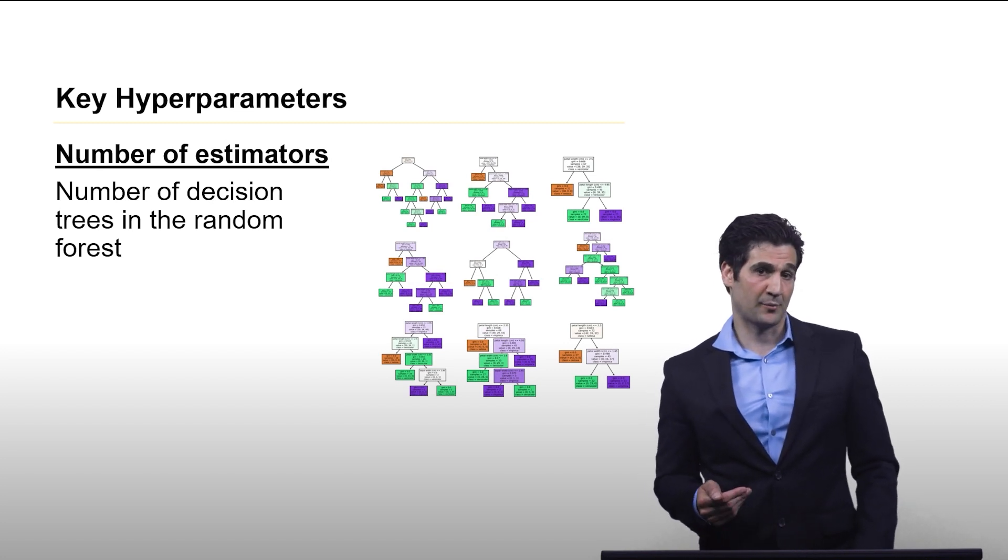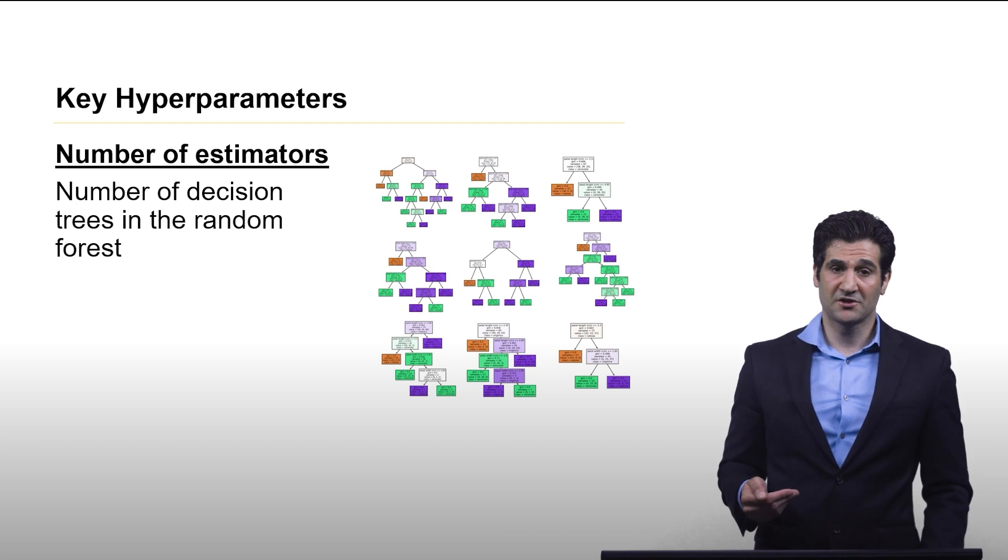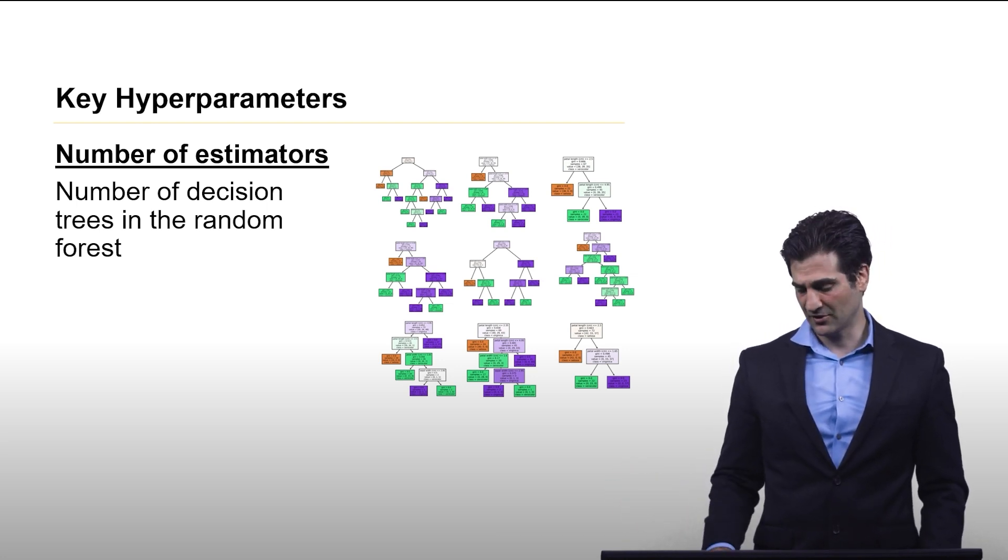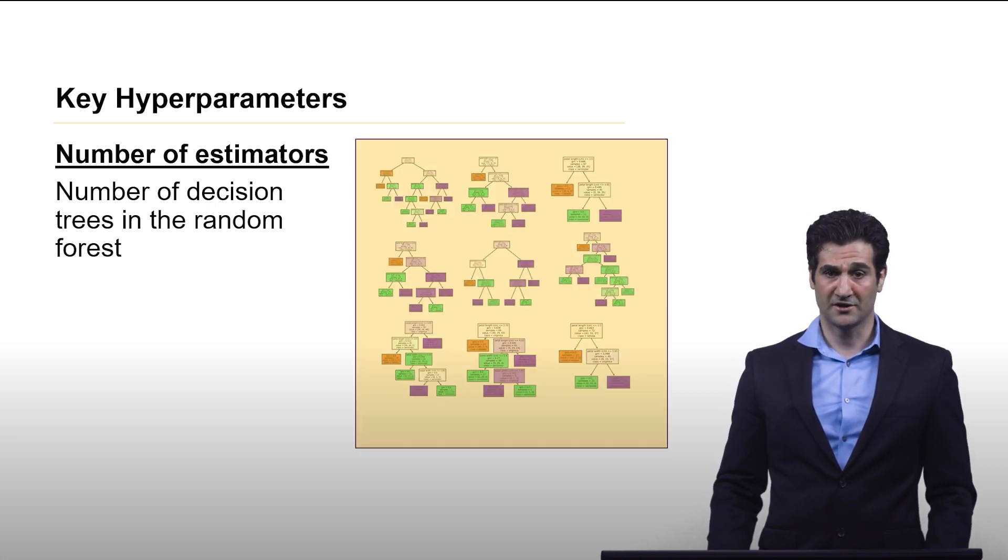These are the key hyperparameters for a random forest. First is the number of estimators, and this is simply the number of decision trees in the forest. On this slide, I am showing you nine trees.